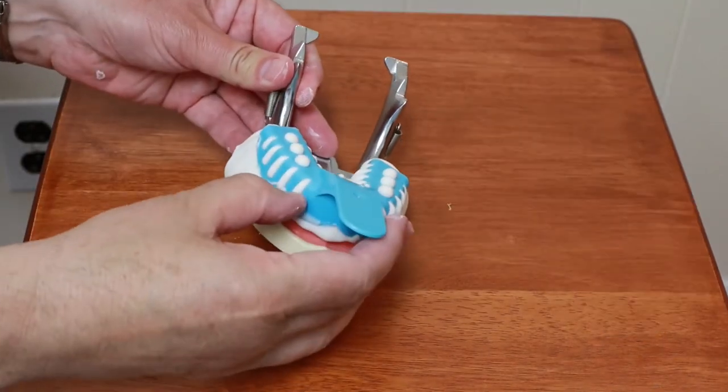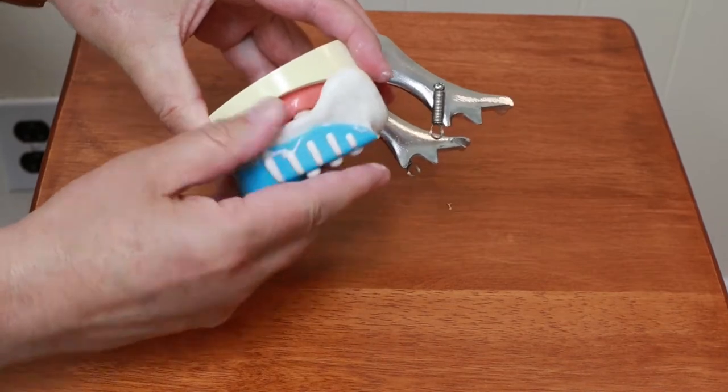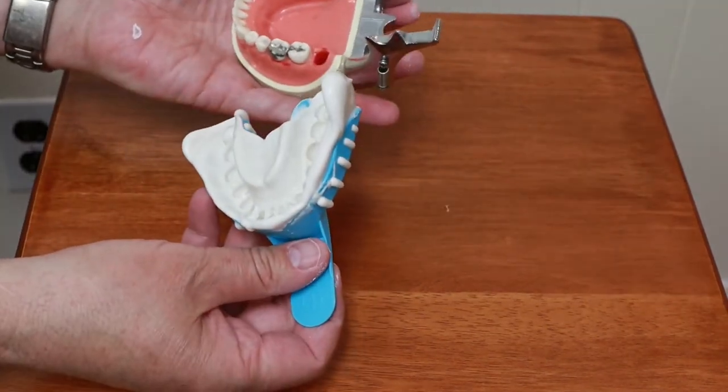The material is set up now. Just separate, take the impression out. And there we have the impression of the lower teeth.